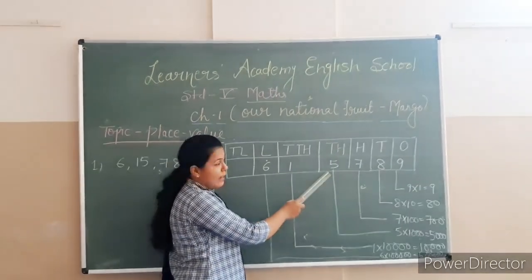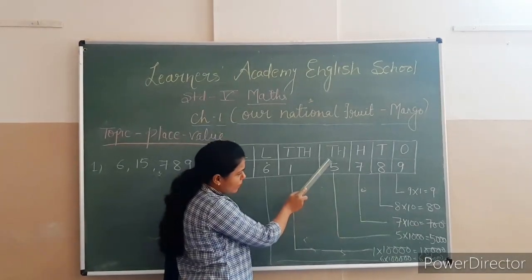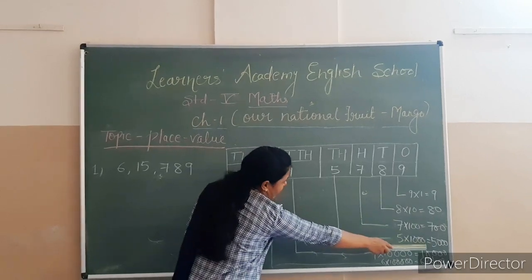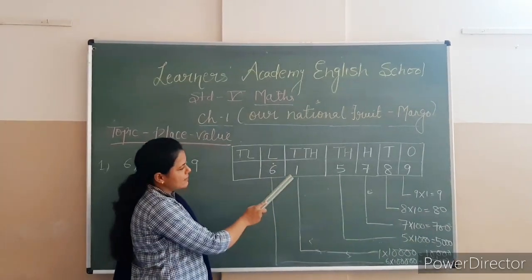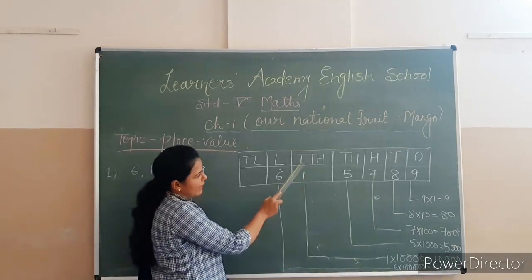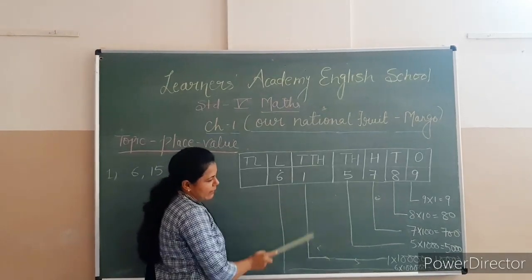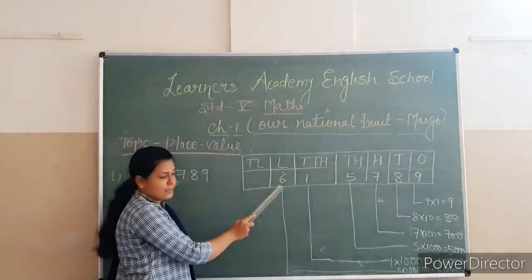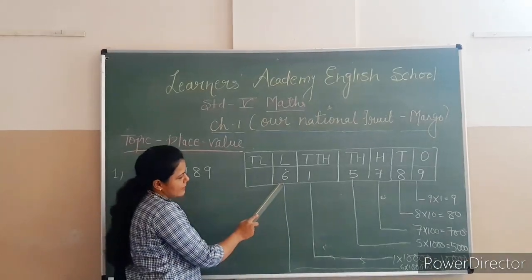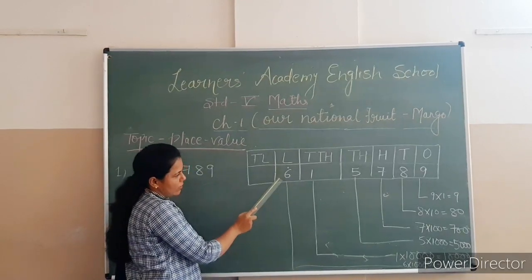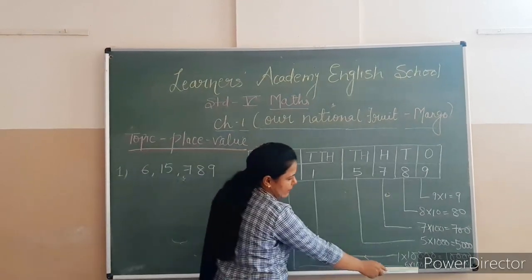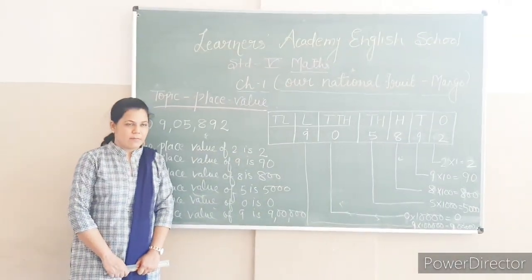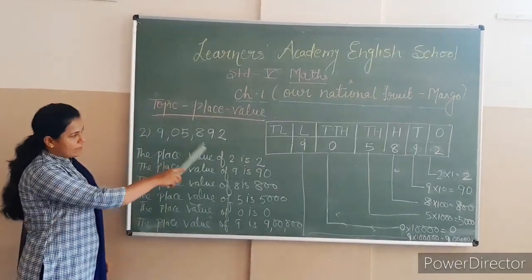Next is 5 and it is placed in the 1000s position, so 5 multiplied by 1000 equals 5000. And the next position is 1, placed in the 10,000s position, so it will be multiplied by 10,000 giving 10,000. And the next position is 6, which will be multiplied by its place value.